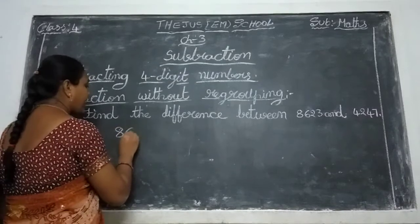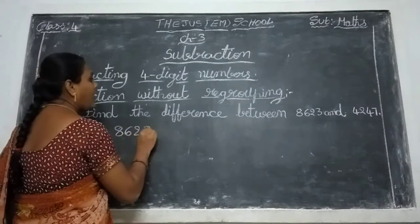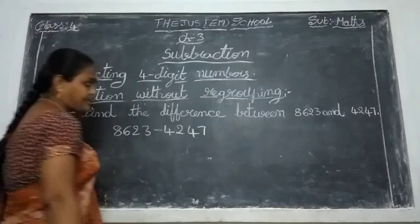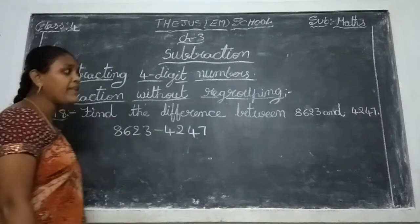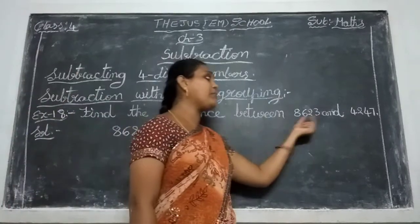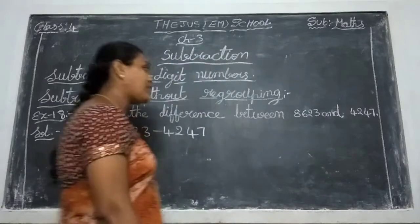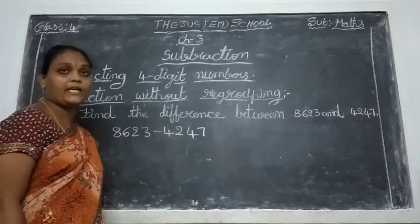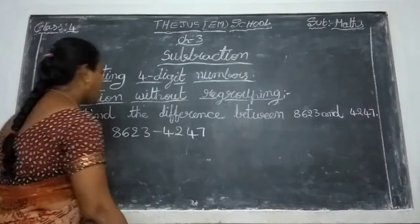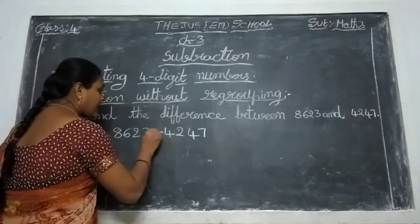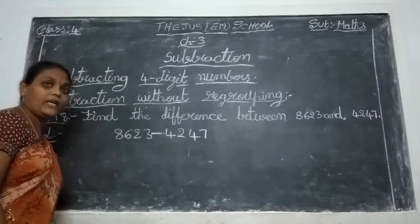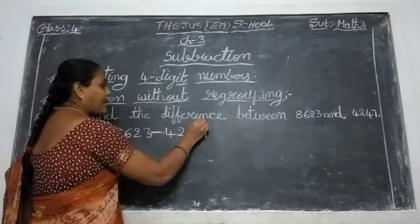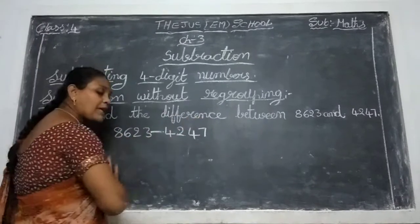Children, what are the numbers? 8, 6, 2, 3 and 4, 2, 4, 7. Given in this way: you write the same numbers — first you write 8623, and second number you write 4247. Put the minus symbol. Difference means you do the subtraction only. Anytime you see 'difference,' you do the subtraction only.